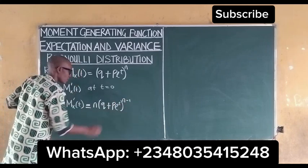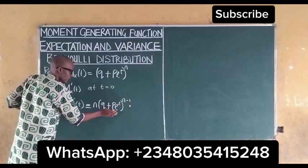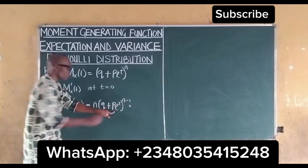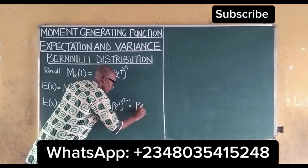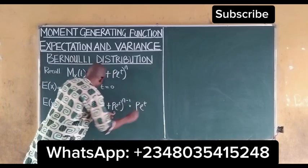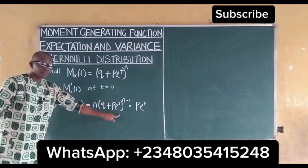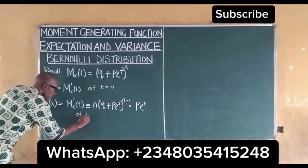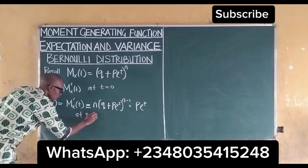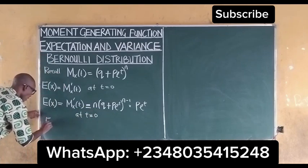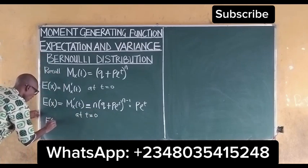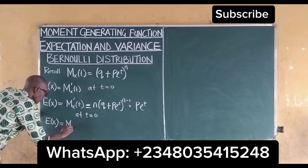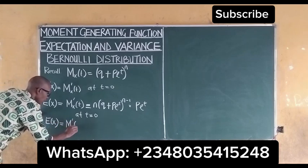If we differentiate this function we have n into q plus p e^t raised to the power of n minus one, multiplied by the derivative of what is inside, which gives p e^t. So this is the first derivative, but evaluated at t equal to zero we have our expectation of x.